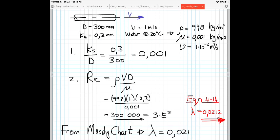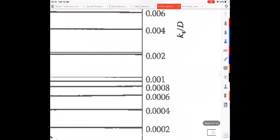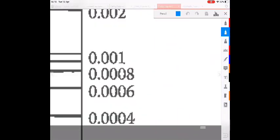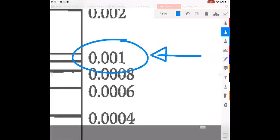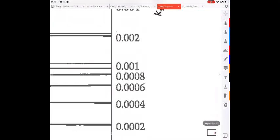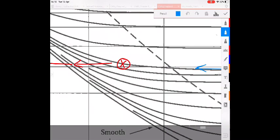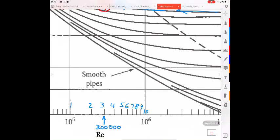Start by calculating the ks over d value and the Reynolds number as you will need both of these. First, ks over d is 0.01. Read that off on the right-hand axis. Follow the line to the left and make sure not to just move horizontally but follow the line.